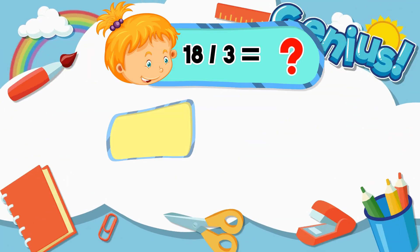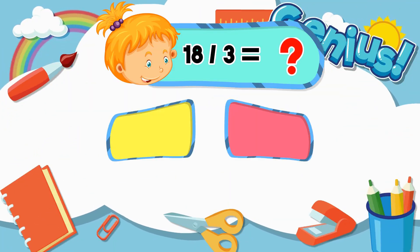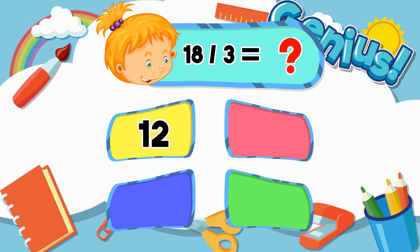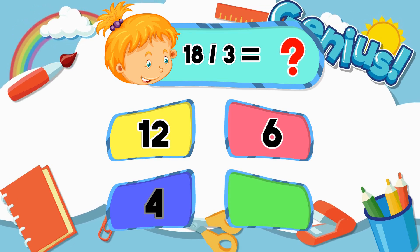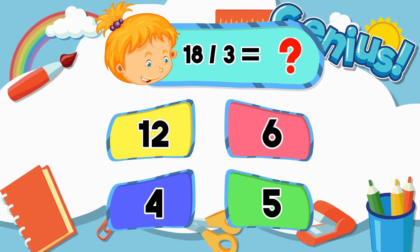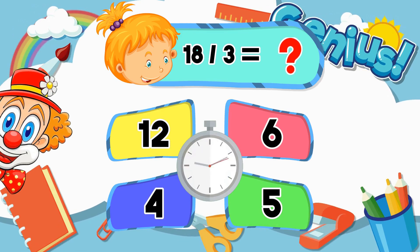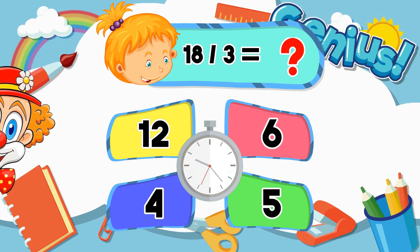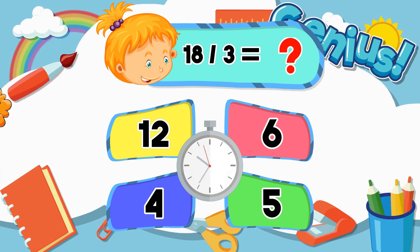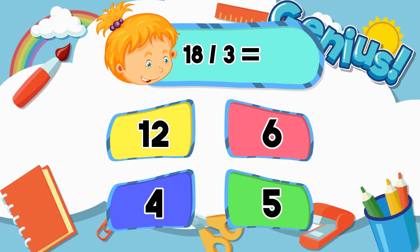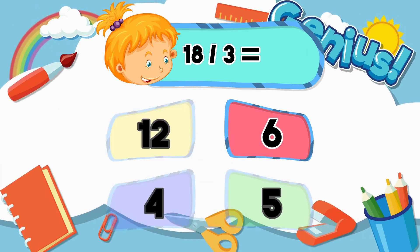What is 18 divided by 3? 12, 6, 4, 5. 6.